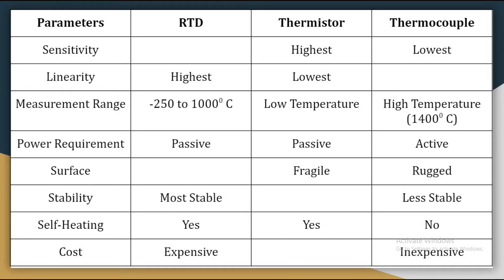We will see the features of the temperature measurement devices as per each particular parameter. Our first parameter is sensitivity. According to sensitivity, thermistor has the highest sensitivity. Thermocouple has the lowest sensitivity, and RTD is located in between thermistor and thermocouple.